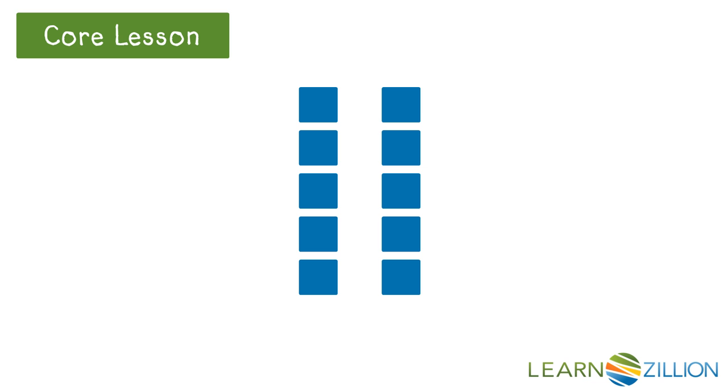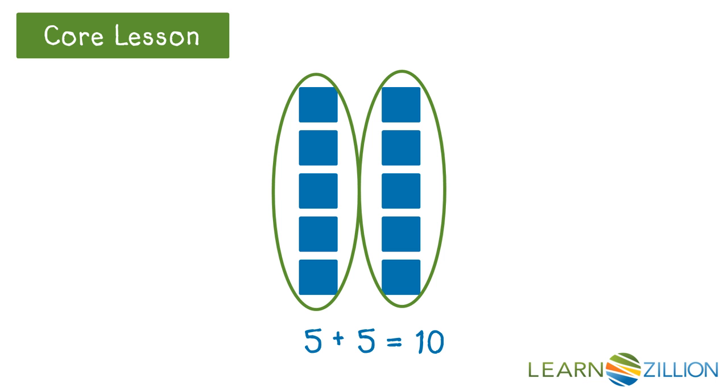There are 10 squares here. Because the number 10 is an even number, the squares can be divided into two equal groups. The equation 5 plus 5 equals 10 is true for these squares. We have five squares in each group, so the add-ins are 5. The sum is 10 because there are 10 squares all together.